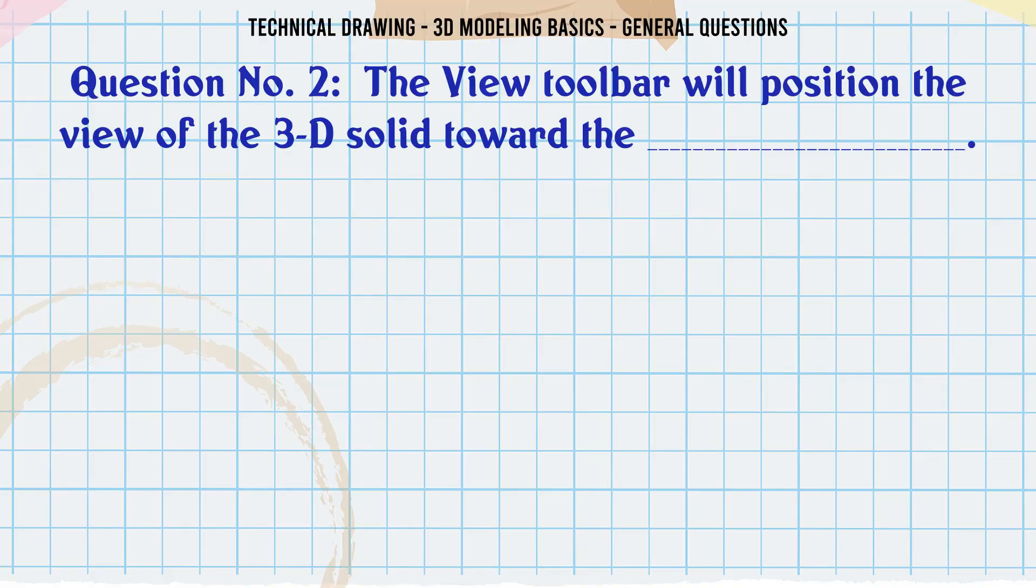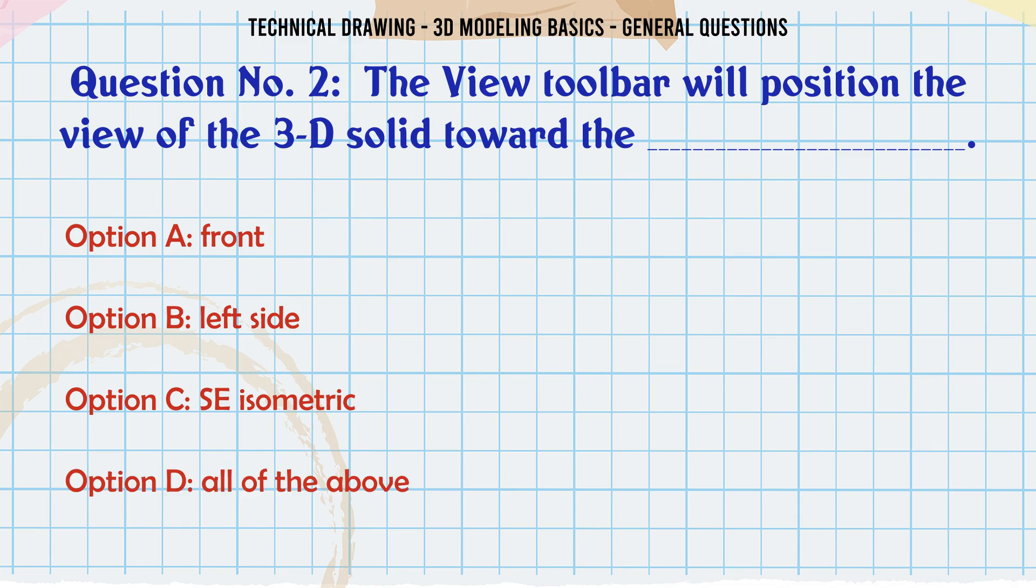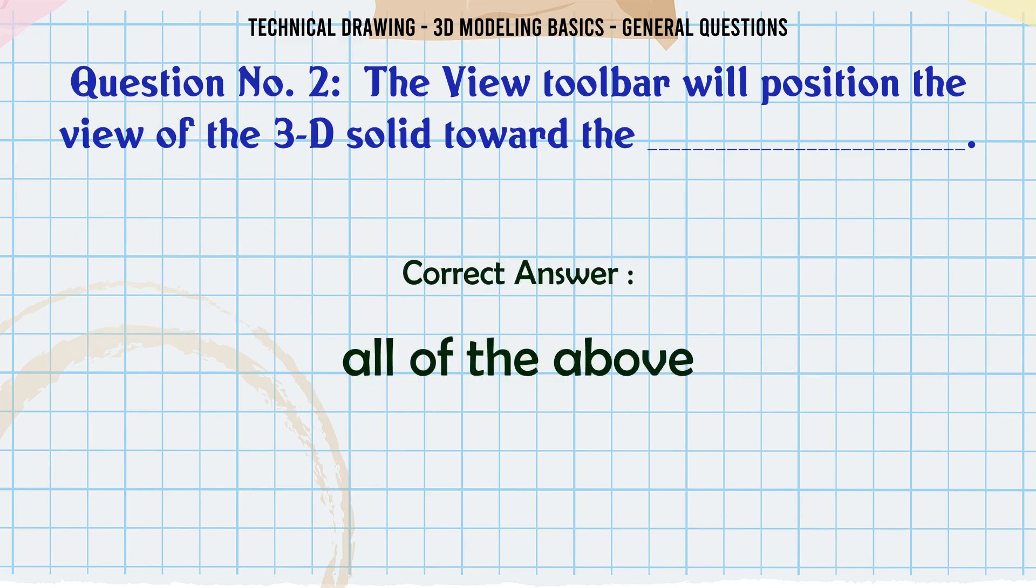The view toolbar will position the view of the 3D solid toward the: A. Front. B. Left side. C. Say isometric. D. All of the above. The correct answer is all of the above.